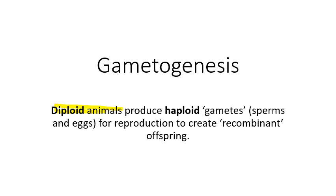Humans are diploid — we have two copies of each chromosome. We got one copy from our mother and one from our father, meaning our parents had to produce haploid eggs and sperm. Haploid means having only one copy of each chromosome and therefore only one copy of each gene. When diploid animals like humans create haploid cells for reproduction, those cells are collectively referred to as gametes — both sperm and eggs are examples.